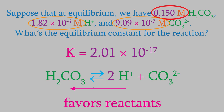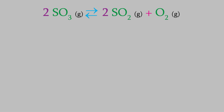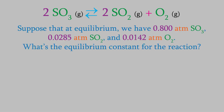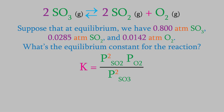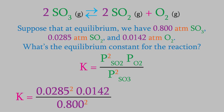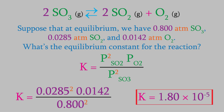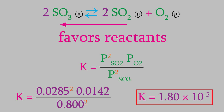Let's try another example. Suppose we have this reaction, and at equilibrium the pressures of the gases are 0.800 atm for sulfur trioxide, 0.0285 for sulfur dioxide, and 0.0142 for oxygen. What's the equilibrium constant? Because all the compounds are gases, we can use the pressures in our equilibrium expression. Remember that we need to use 2 for the exponent on the SO₂ and SO₃. We plug in the data from the question, and that gives us an equilibrium constant of 1.80 × 10⁻⁵. Notice that this number is much less than 1, so this is another reaction that favors the reactants.